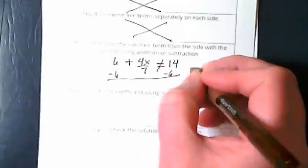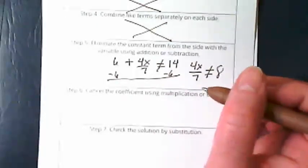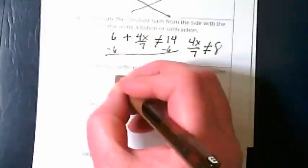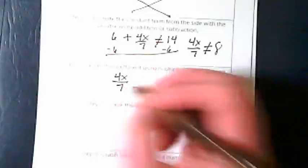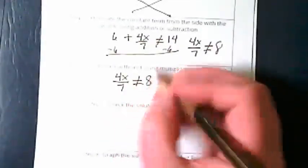I'm going to rewrite my work over here because I'm running out of space. I've got 4x divided by 7 is not equal to 8. We're going to rewrite what we have done here to show our steps. Typically when you're solving these, you don't have to keep rewriting it. We're just doing this to show which step we're working on here.